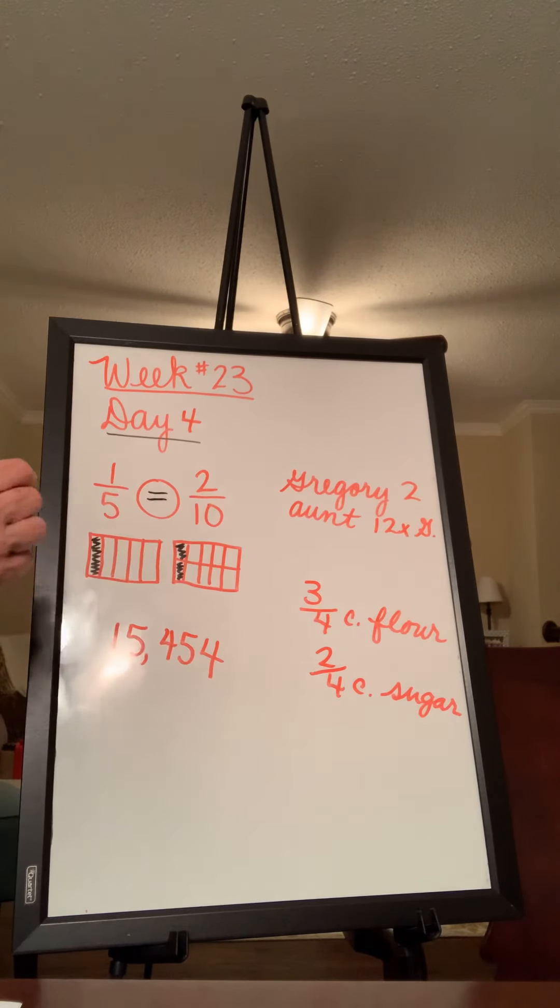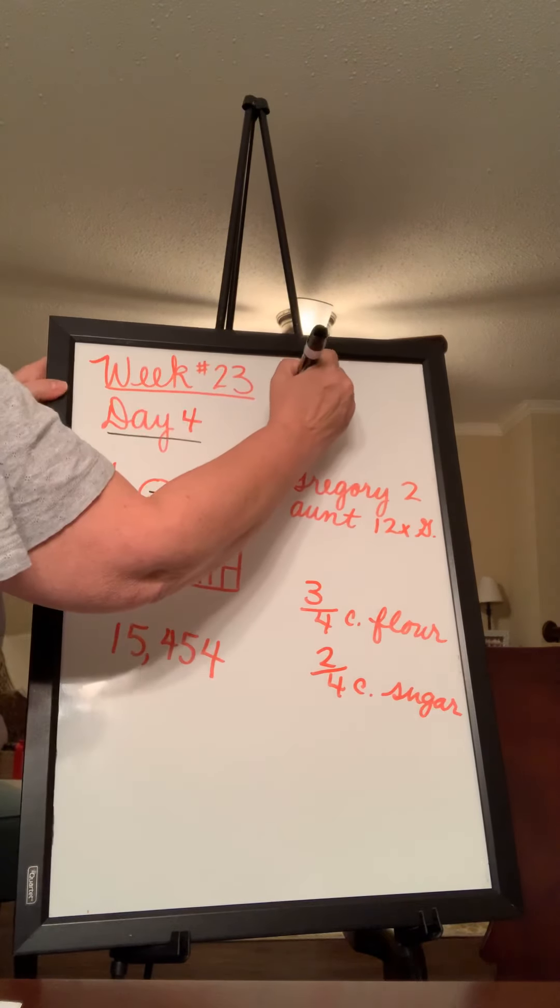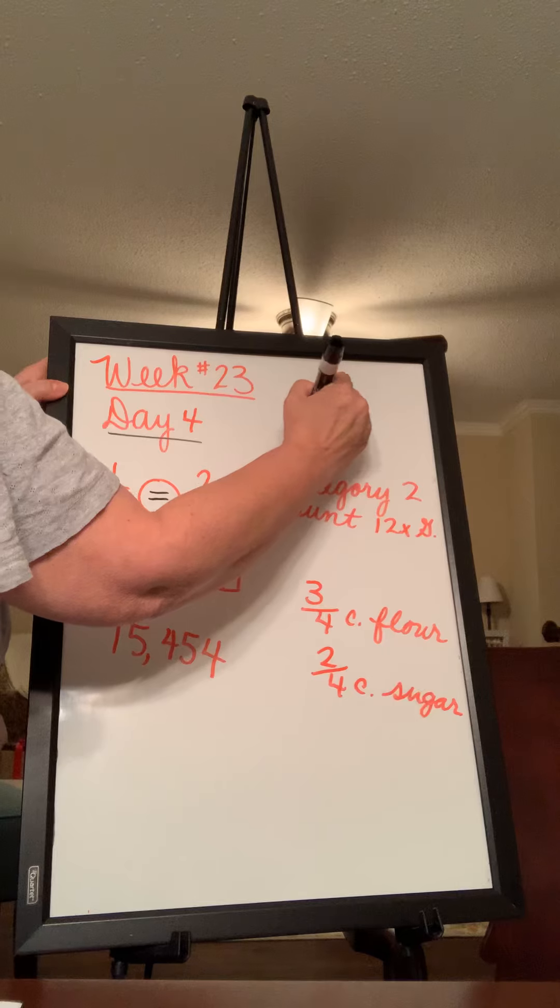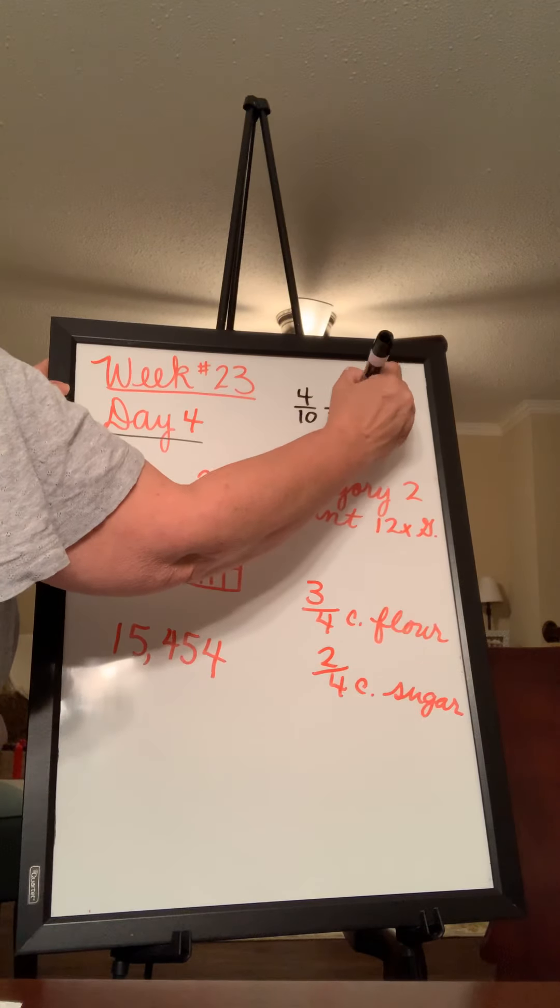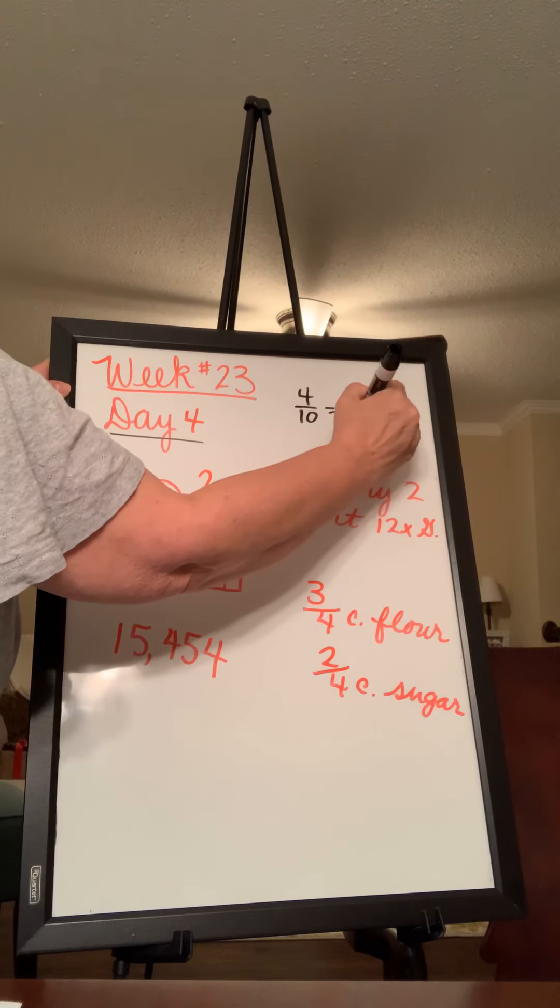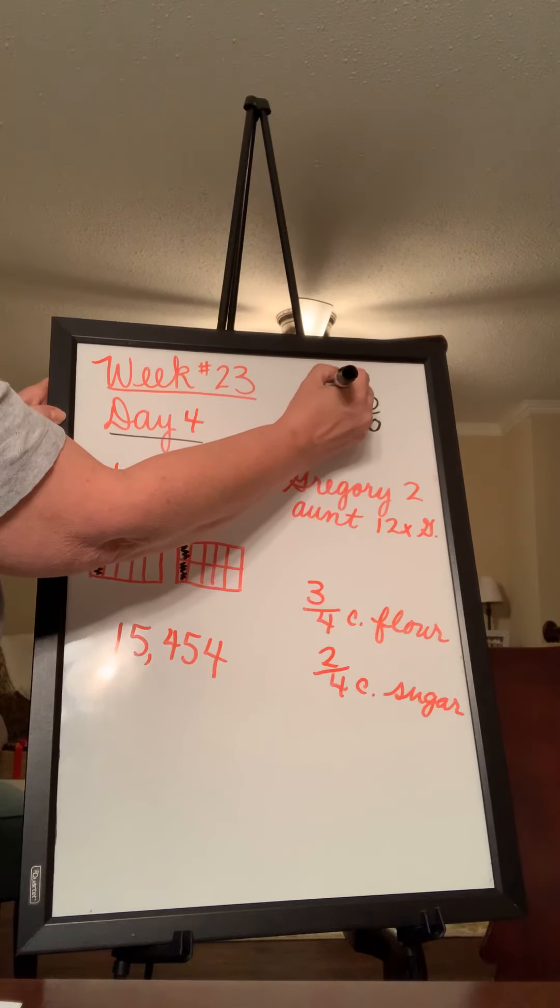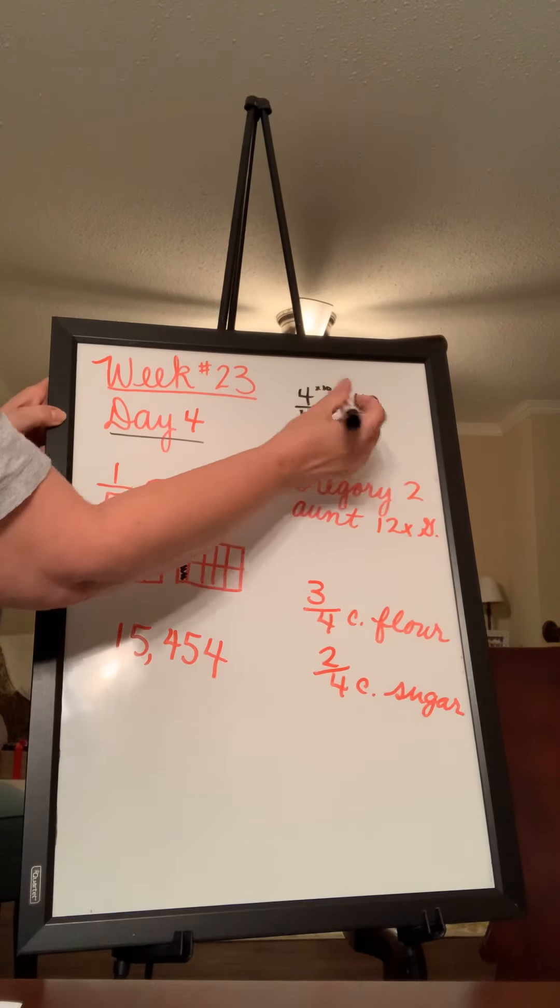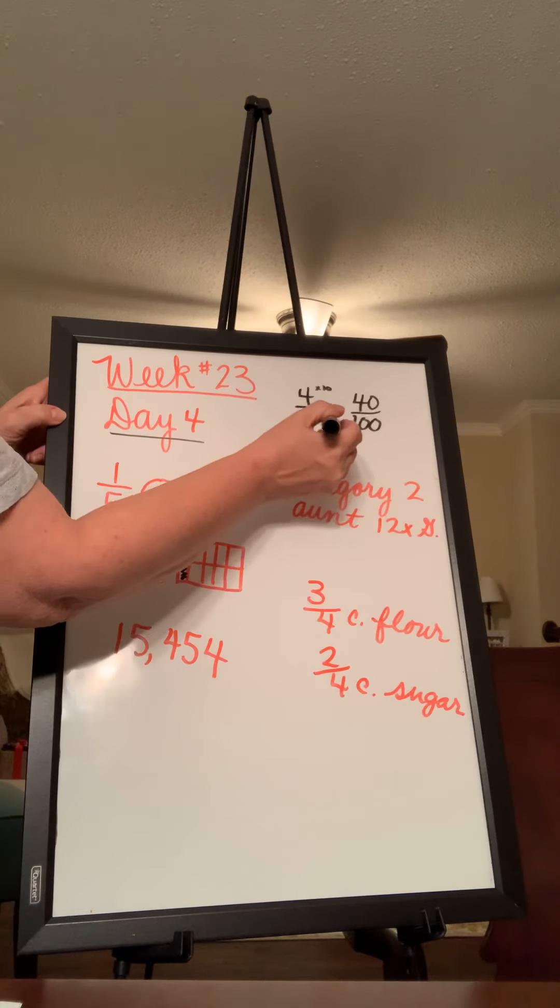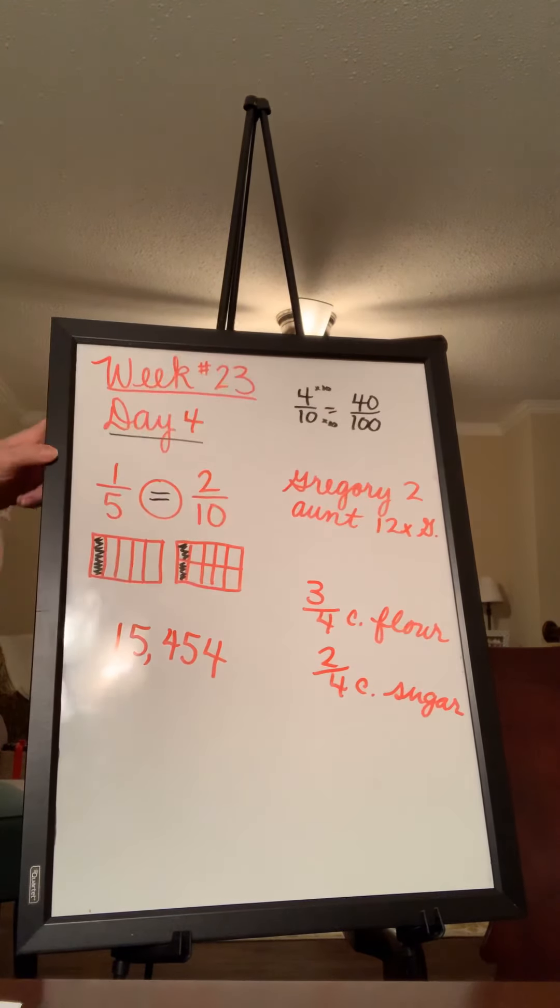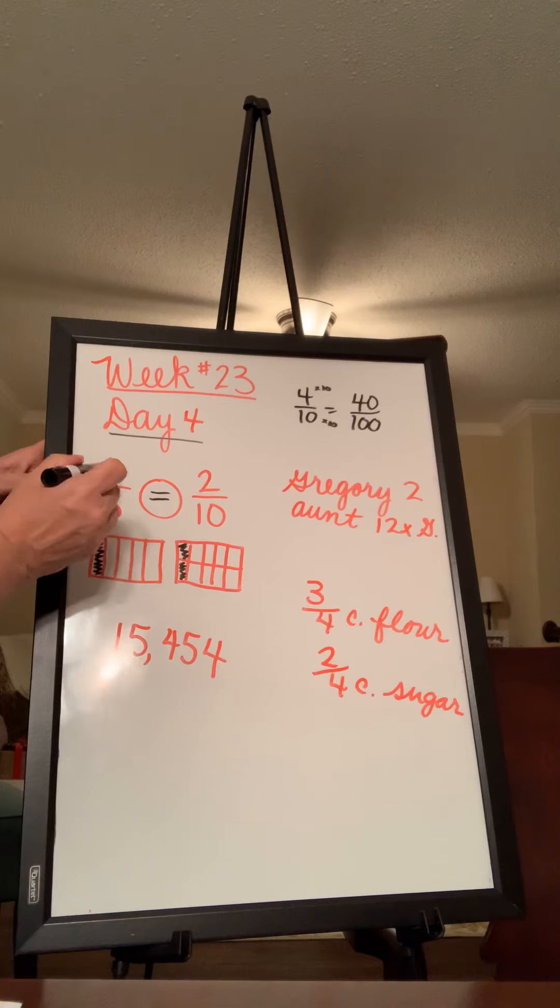And if you'll remember when we were doing our fractions yesterday on day three, we had, for example, four-tenths was the same as 40 one-hundredths. And we said to do that, all you had to do was multiply each one by 10. Four times 10 is 40, ten times 10 is 100, and the fractions would be equal. Well, you could do the same thing here.